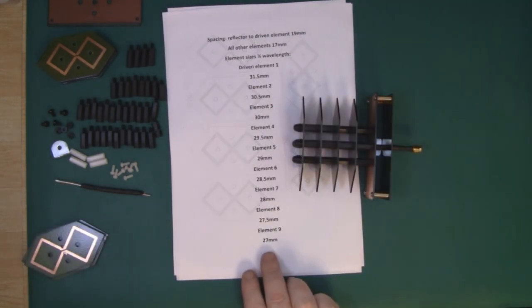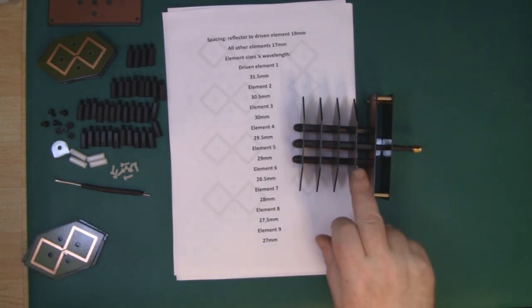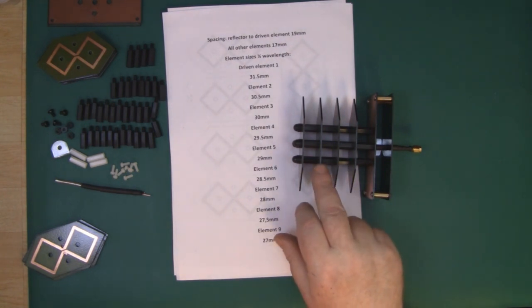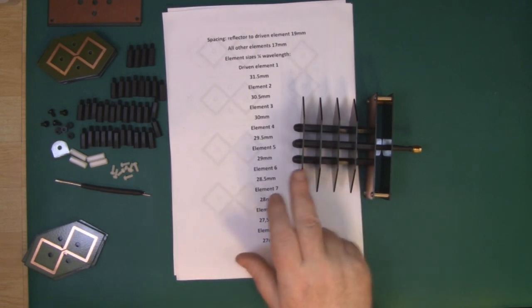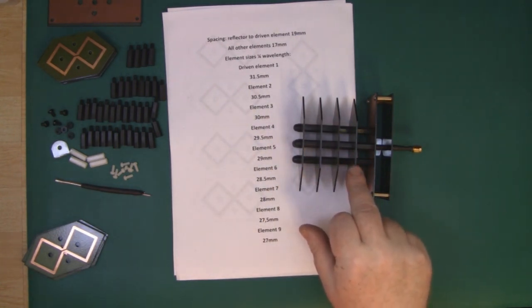This longer biquad Yarky has nine elements. That may actually change when I put it into production. If you followed me from when I did my first few videos on the biquad Yarky, when I first prototyped this it had four parasitic elements and the main driven element.